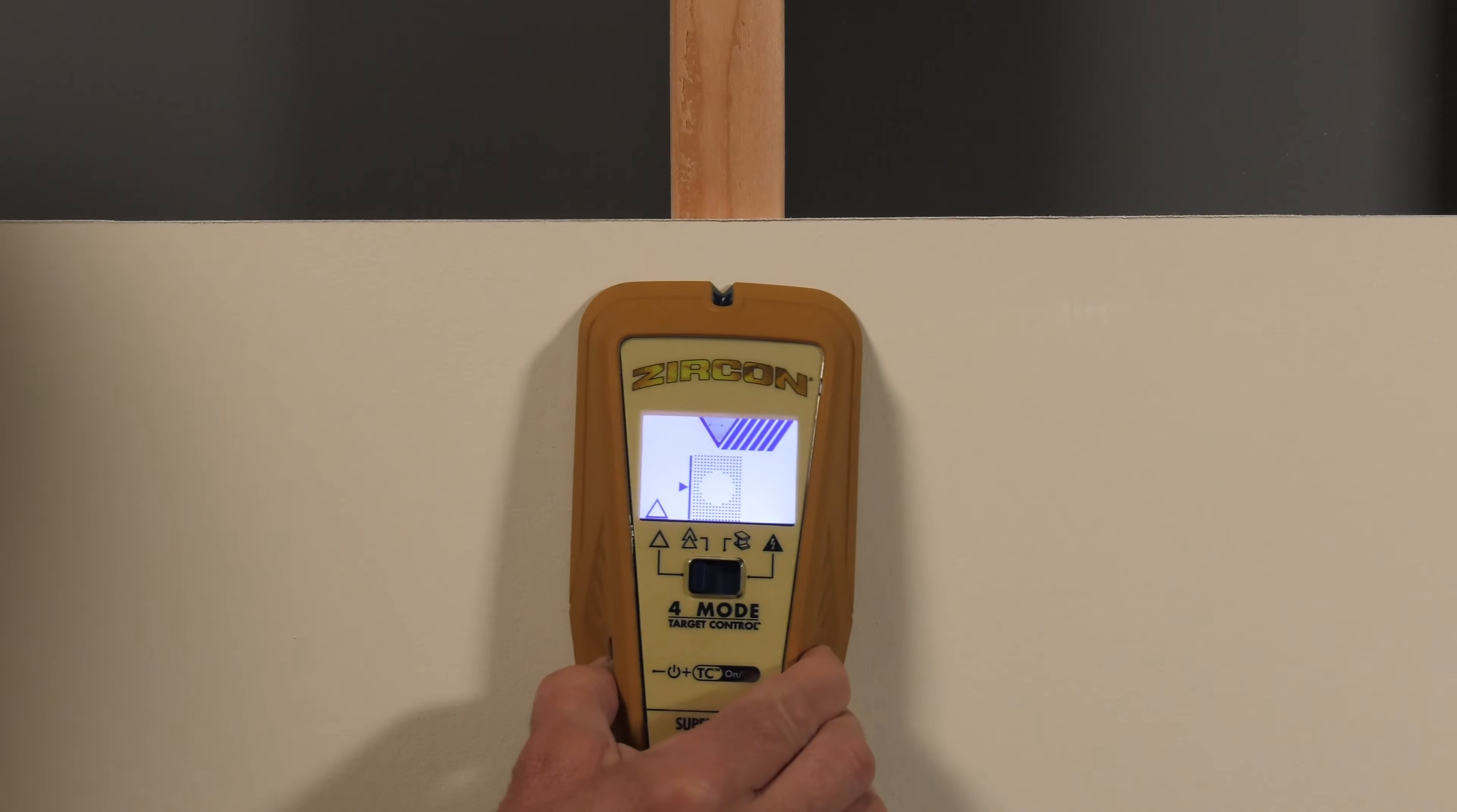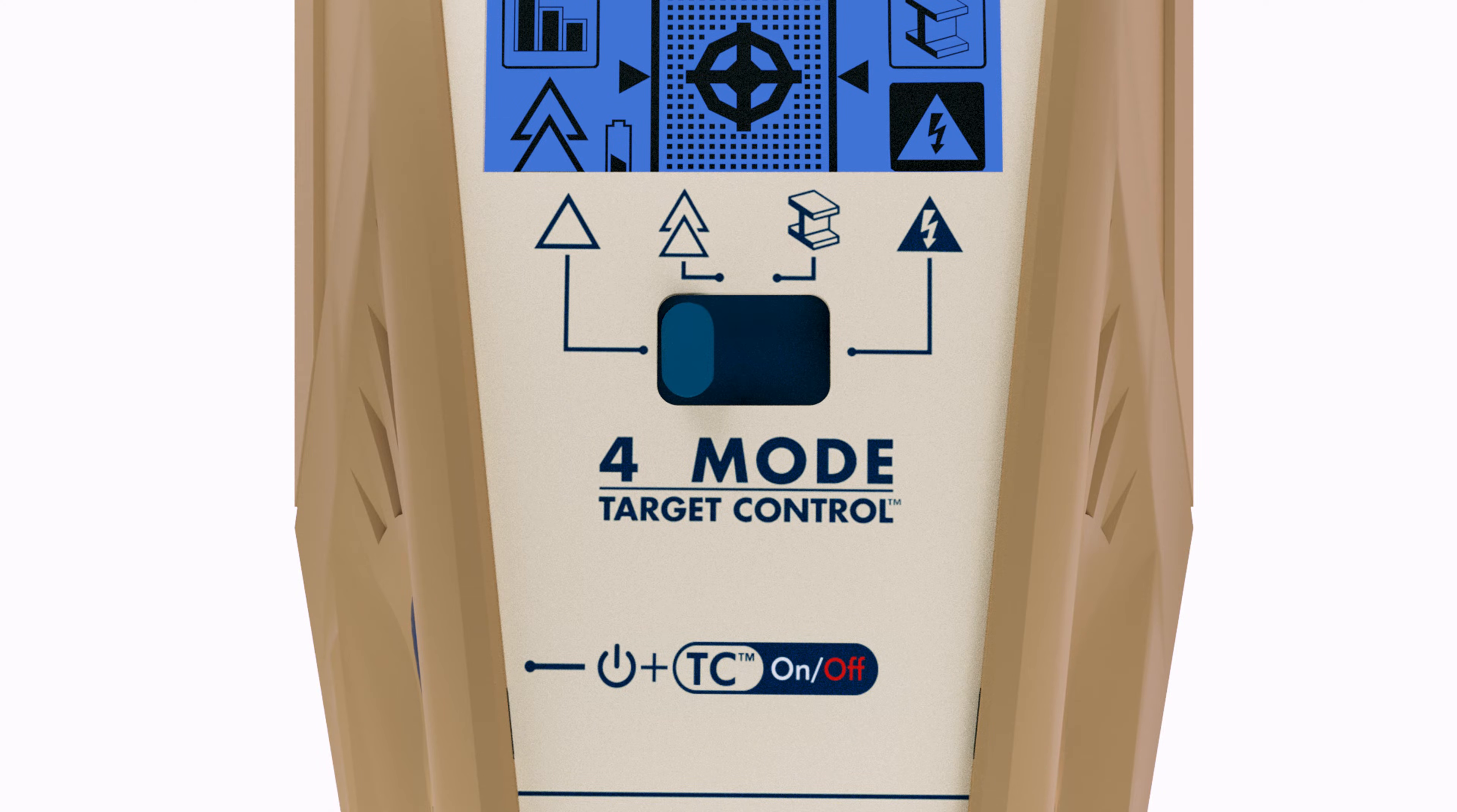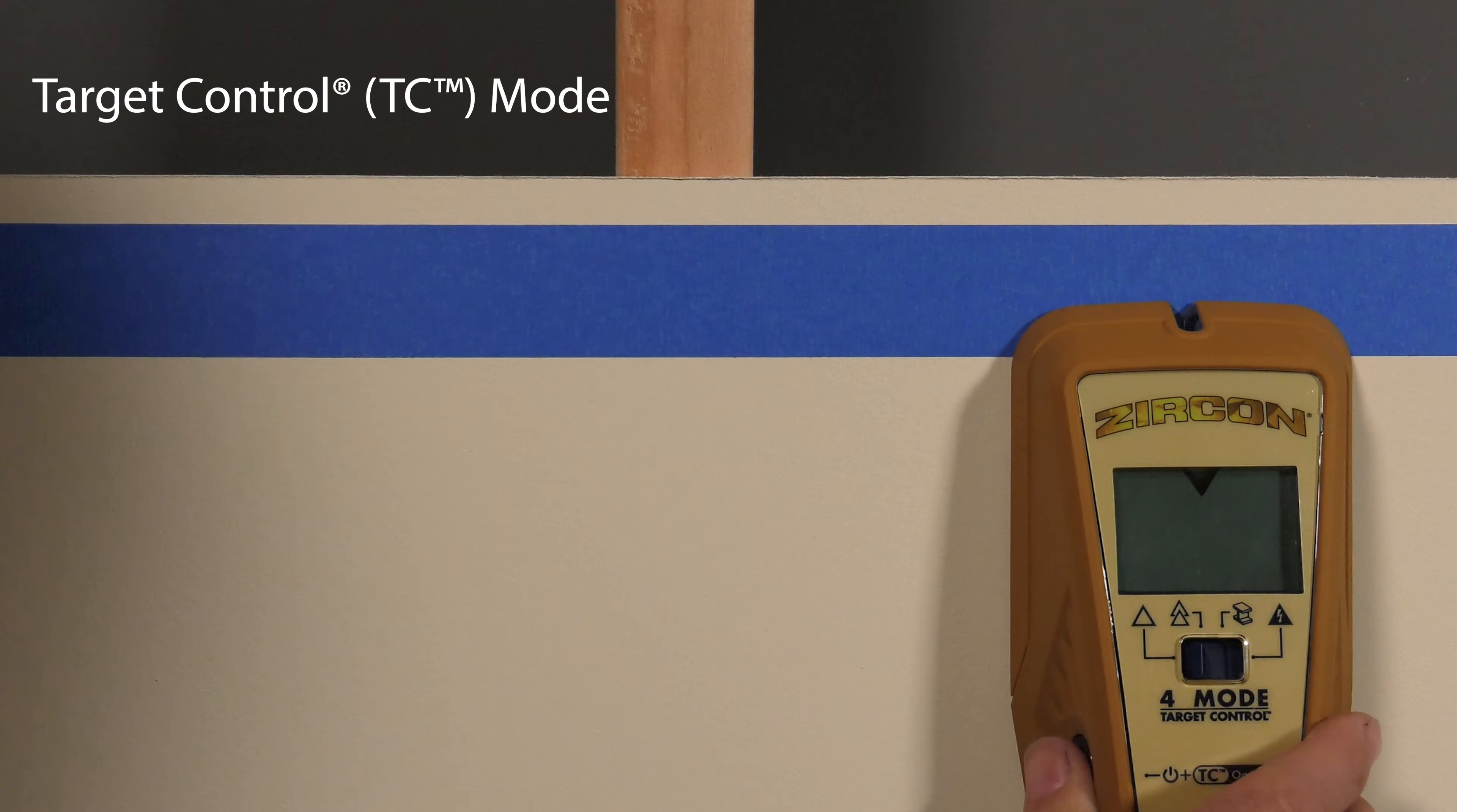To find wood studs, use TC mode. Switch the mode selector to the far left position. Place the tool on the wall. Press and hold the power button. Tool will default to TC mode with a pale blue backlight.